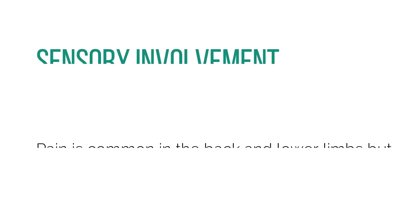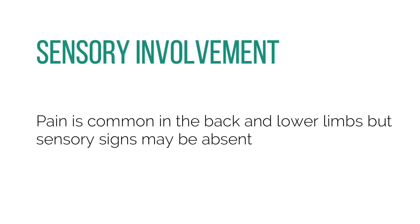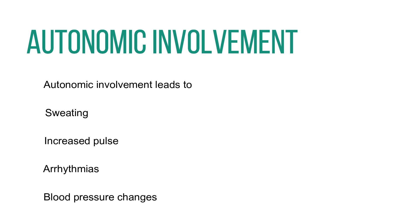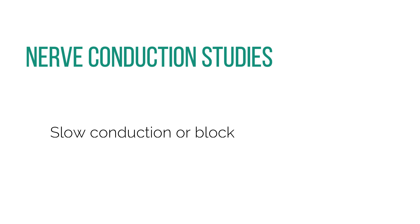Pain is common in back and lower limbs, but sensory signs may be absent. Autonomic involvement leads to sweating, increased pulse, arrhythmias, or blood pressure changes. Nerve conduction studies may show slow conduction or block.